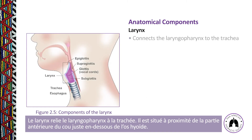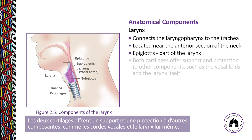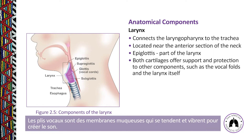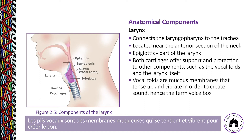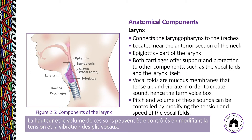The larynx connects the laryngopharynx to the trachea, located near the anterior section of the neck just below the hyoid bone. The epiglottis is part of the larynx, as are the thyroid cartilage, the cricoid cartilage, and the vocal folds. Both cartilages offer support and protection to other components. The vocal folds are mucous membranes that tense up and vibrate to create sound — the pitch and volume can be controlled by modifying their tension and speed.